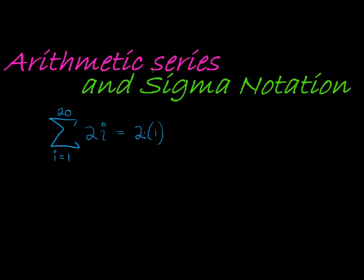So 2 times 1 plus 2 times 2, plus and this goes on all the way until i actually reaches 20, so 2 times 20.